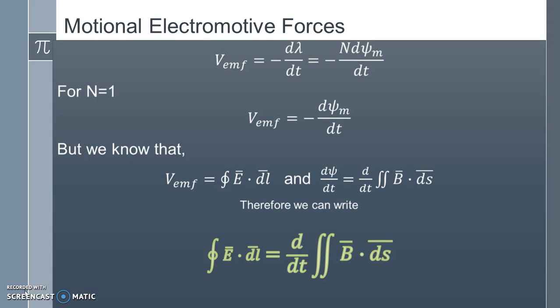Further, if we consider for a single turn coil, that is n is equal to 1, then VEMF will be equal to minus d phi m by dt. But we know that voltage is line integral e bar dot dl bar and the flux is surface integral of flux density b bar dot ds bar. Therefore, we can write now, line integral e bar dot dl bar is equal to d by dt of surface integral b bar dot ds bar. This shows a relation between a magnetic field and the electric field.